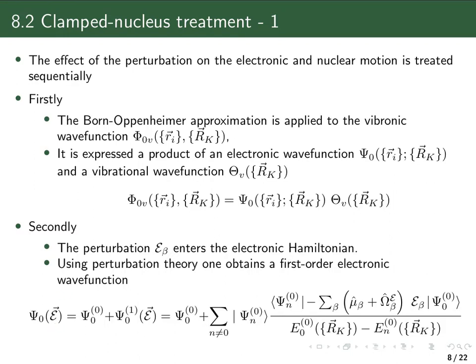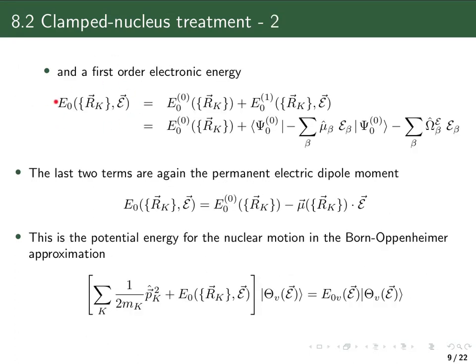The electronic wave function as a function of the external electric field consists of the unperturbed wave function plus a first-order correction. The first-order correction, exactly as in chapter three, involves a sum over electronic excited states, with energy denominators being the electronic excited state energy minus the ground state energy at the same nuclear geometry, and the perturbation operator is the electronic dipole moment operator plus the nuclear dipole moment operator multiplied by the corresponding component of the external electric field.